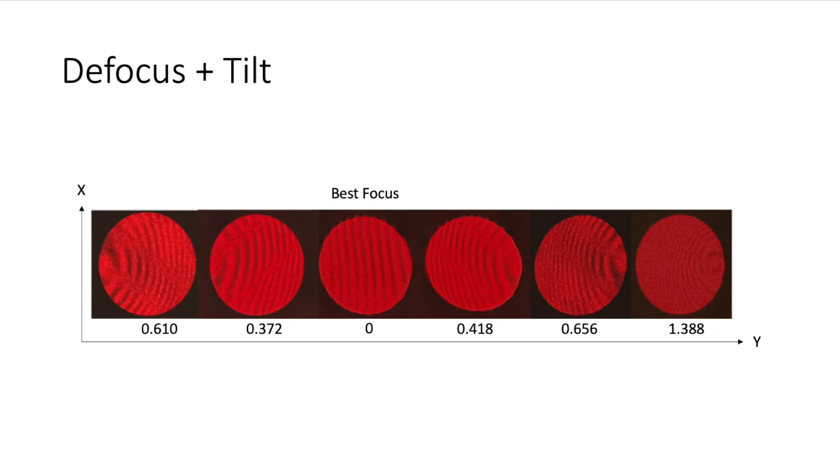When I added defocus to the x-tilted mirror, I saw the center of the fringe pattern shift horizontally. The zero-order fringe moved closer to the spot's center as I added more defocus.